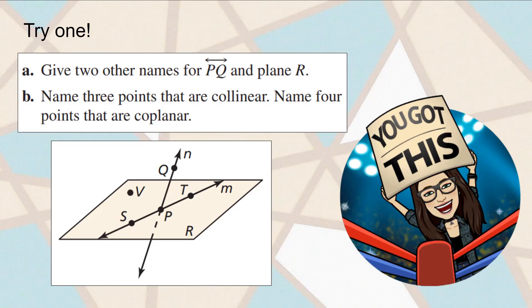Now we're going to try one. Give two other names for line PQ and plane R. Name three points that are collinear. Name four points that are coplanar.